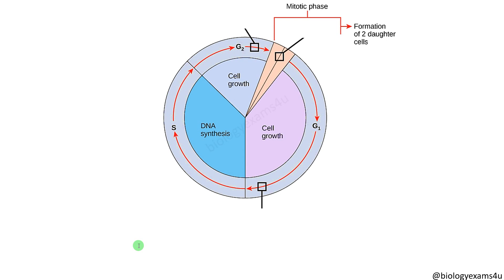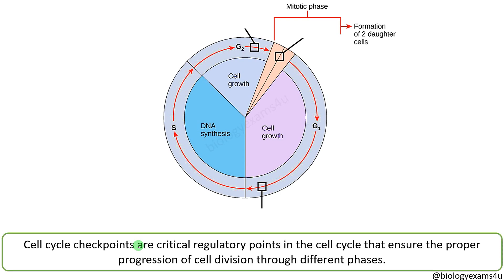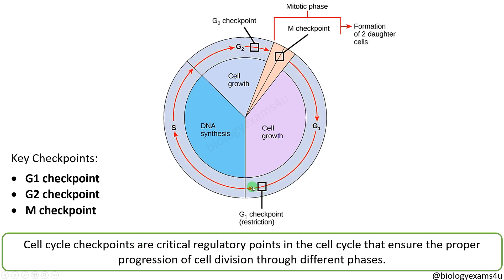What do you mean by cell cycle checkpoints? Cell cycle checkpoints are critical regulatory points in the cell cycle that ensure the proper progression of cell division through different phases. The three checkpoints are: the G1 checkpoint, the G2 checkpoint, and the M checkpoint.